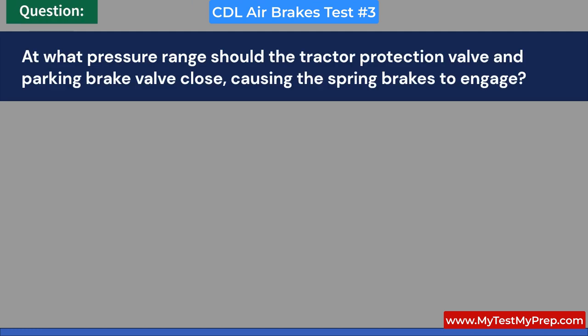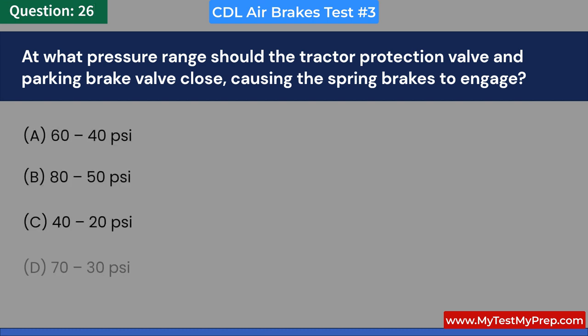At what pressure range should the tractor protection valve and parking brake valve close, causing the spring brakes to engage? A. 60 to 40 PSI. B. 80 to 50 PSI. C. 40 to 20 PSI. D. 70 to 30 PSI. Answer: C. 40 to 20 PSI.